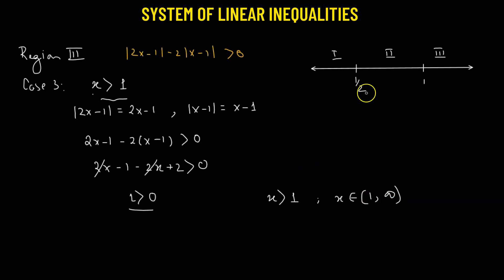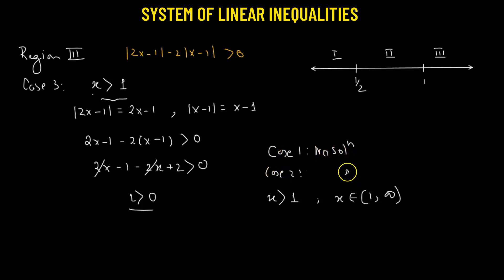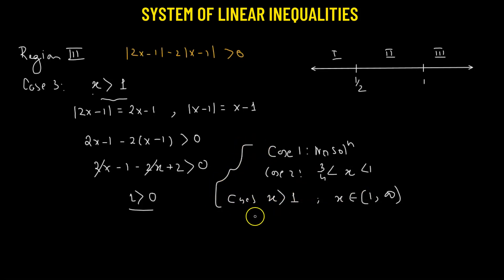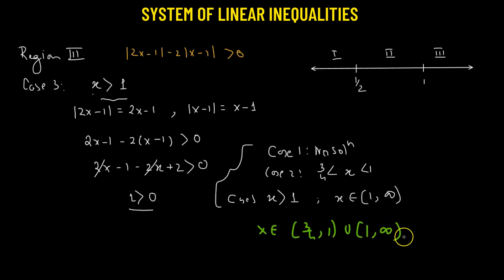Combining all three cases: Case 1 gave no solution, Case 2 gave x in (3/4, 1), and Case 3 gave x in (1, infinity). Therefore the final solution is x belonging to (3/4, 1) union (1, infinity). This is the solution to the given linear inequality.